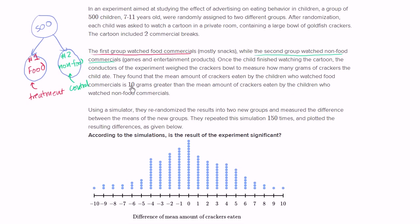Once each child finished watching the cartoon, they weighed how much of the crackers each child ate, then took the mean. They found that the kids in the food commercial group ate 10 grams more on average than the control group. Just looking at that data makes you believe that the treatment — watching food commercials — made the students eat more goldfish crackers.